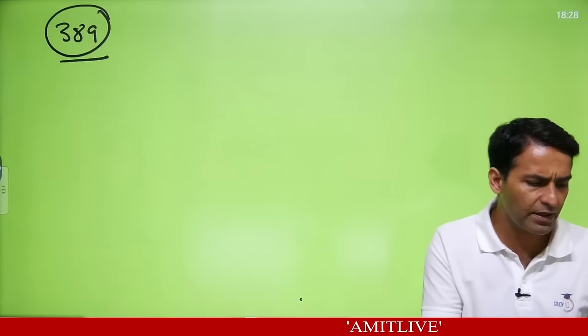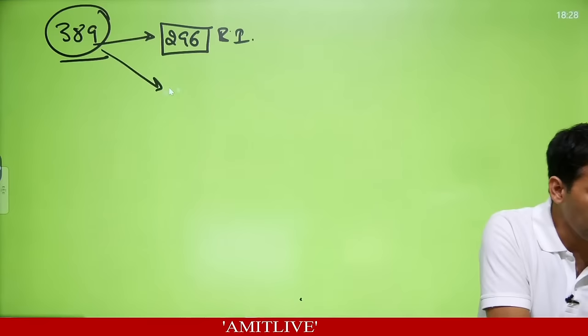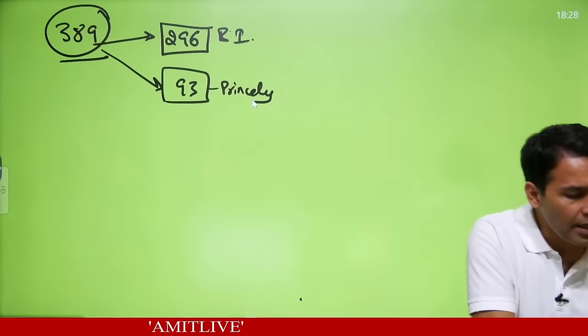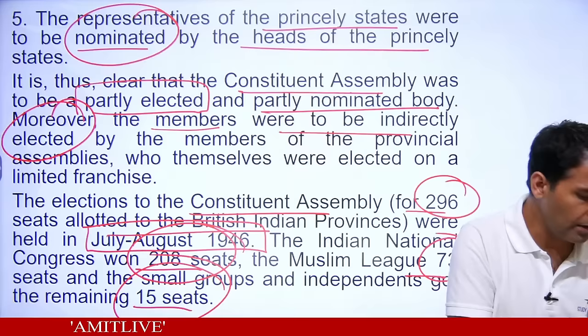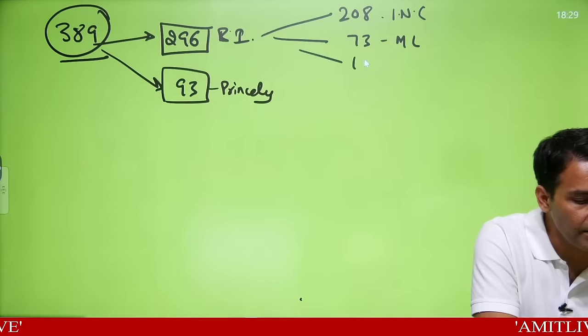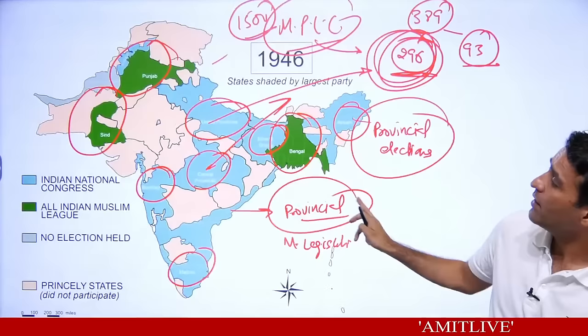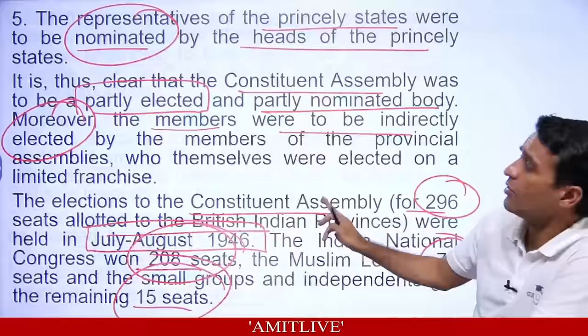Out of 389, 296 were from British Indian provinces and 93 from princely states. The 296 elections were done in July-August. Congress got 208 seats, Muslim League 73, and 15 independents. The areas where Muslim League had majority sent Muslim League members; where Congress had majority they sent Congress members. The 93 seats from princely states were not filled as those people hadn't joined yet.